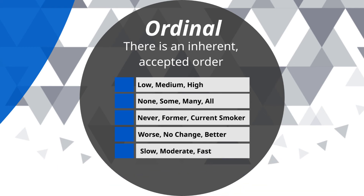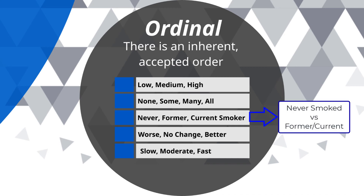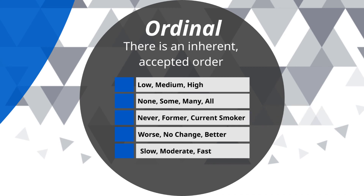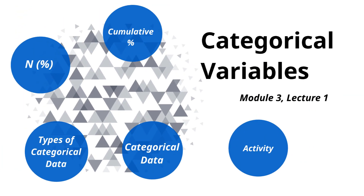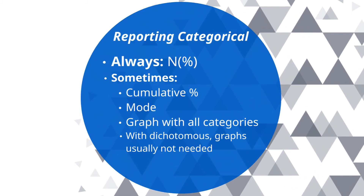You can always collapse an ordinal variable down to a dichotomous variable. For example, none, some, many, all could become none versus any. Or you could look at never smokers versus any history of smoking. Now that we know the types of categorical data — dichotomous, nominal, and ordinal — how do we report categorical data?